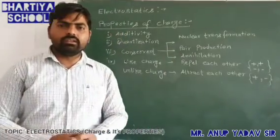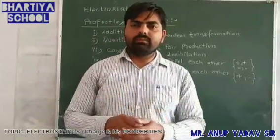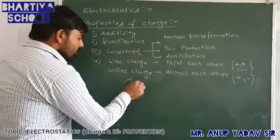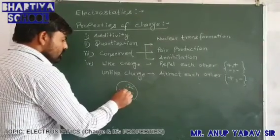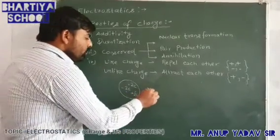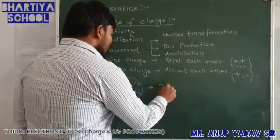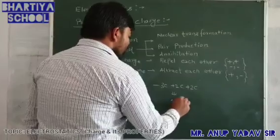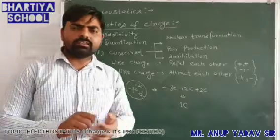The first property is additivity. Additivity means the net charge on a body is simply calculated by the algebraic sum of all the charges placed over it. For example, if at certain locations we have +2 coulombs, −3 coulombs, and +2 coulombs, the net charge will be (+2) + (−3) + (+2) = +1 coulomb.